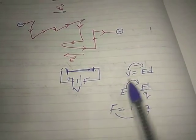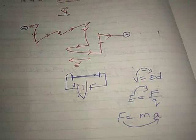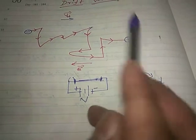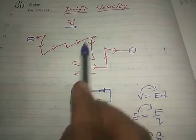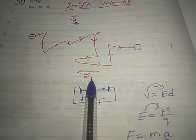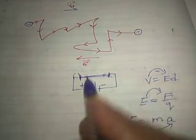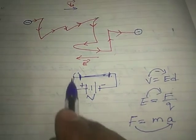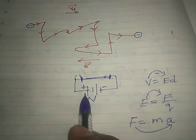The electric field provides the force. The electric field is due to the potential difference applied by the battery. The electrons are always moving opposite to the direction of the electric field. The electric field direction is from positive to negative — from right to left — while electrons move from left to right, from the negative terminal to the positive terminal of the battery.